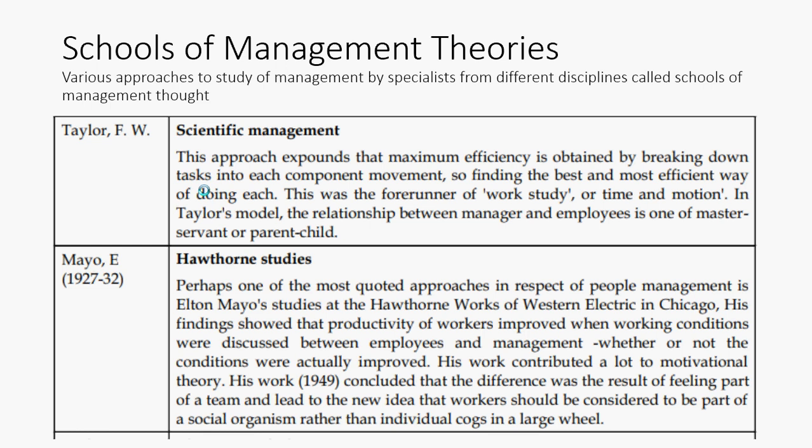In Taylor's model, the relationship between manager and employee is that of master and servant, or parent and child. The master gives a set of instructions to the servant, who follows them to do the work. The same philosophy applies in the organization under the scientific management school.